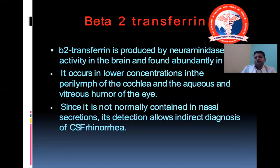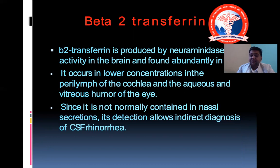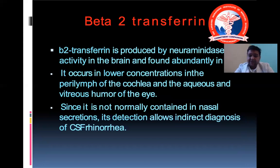Beta-2 transferrin is produced by neuraminidase activity in the brain and is found abundantly in CSF but not normally in nasal secretions. Its detection allows indirect diagnosis of CSF rhinorrhea. If a patient presents with a runny nose after head injury, a beta-2 transferrin test should be performed — its presence indicates CSF rather than normal rhinorrhea.